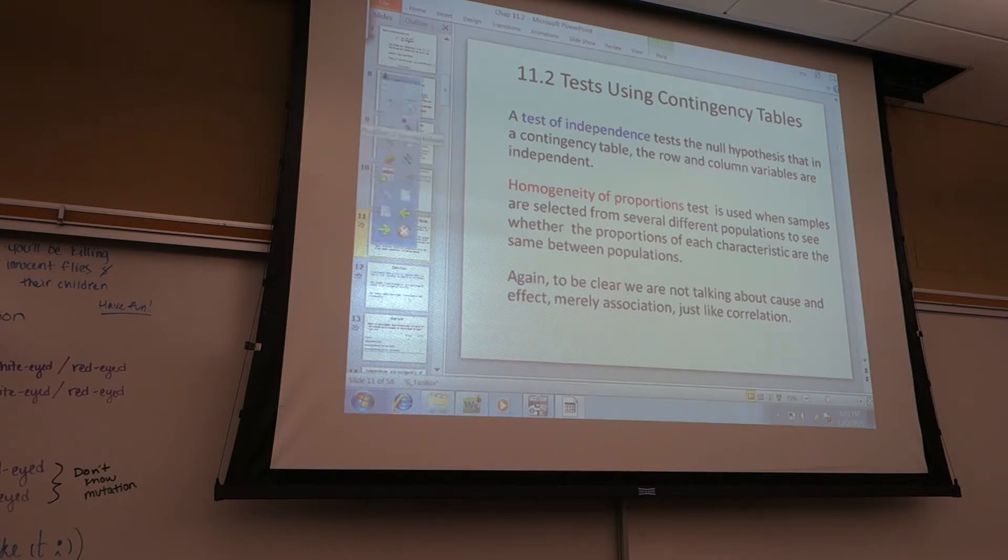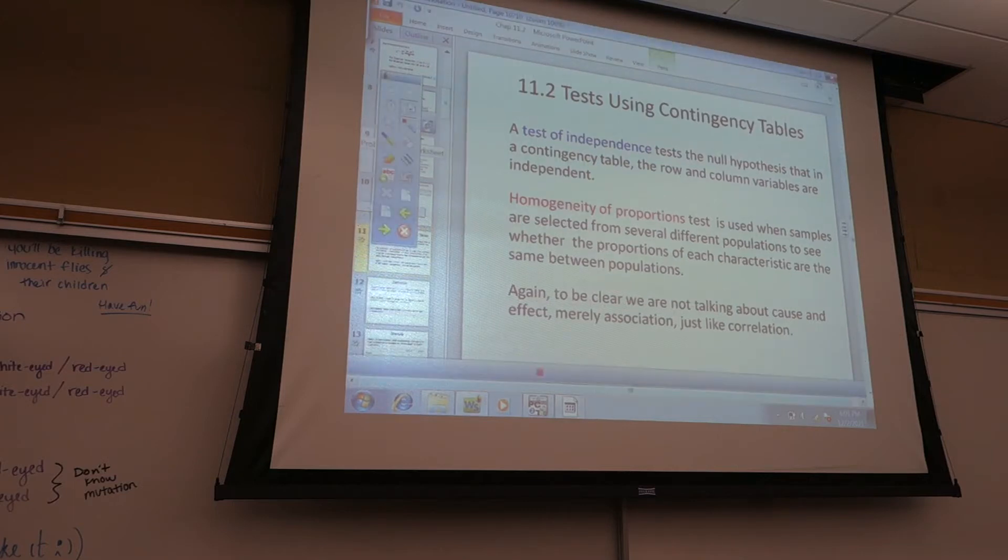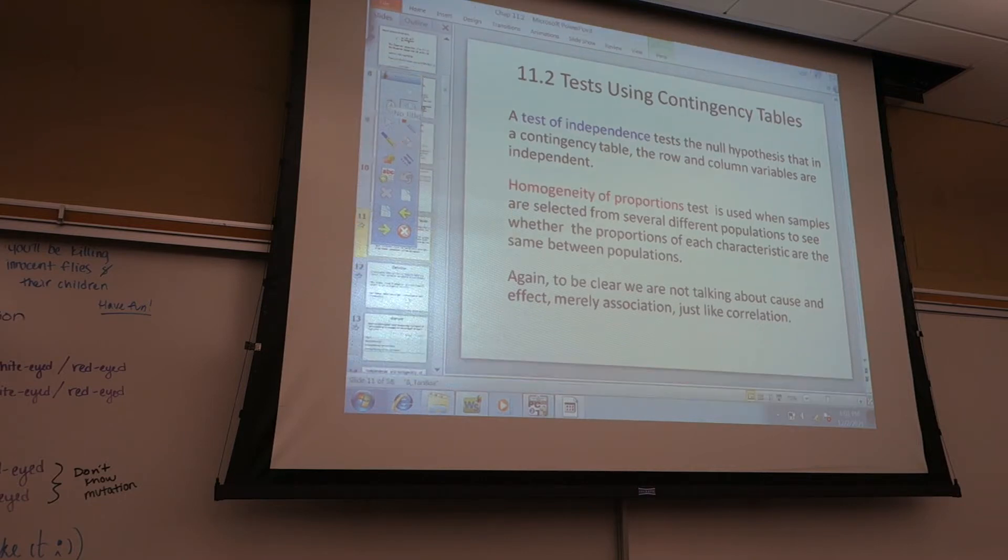A test of independence tests the null hypothesis that in a contingency table, the row and column variables are independent. Homogeneity: a proportions test is used when samples are selected from several different populations to see whether the proportions of each characteristic are the same between populations. Again, to be clear, we are not talking about cause and effect, merely association, just like coordination.